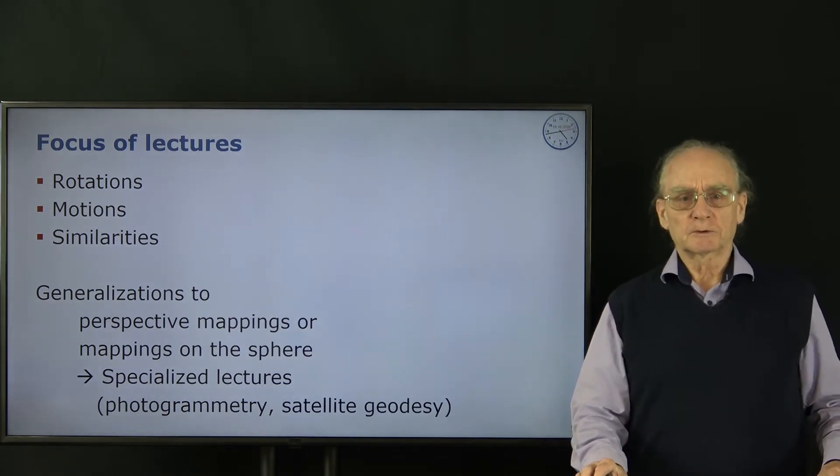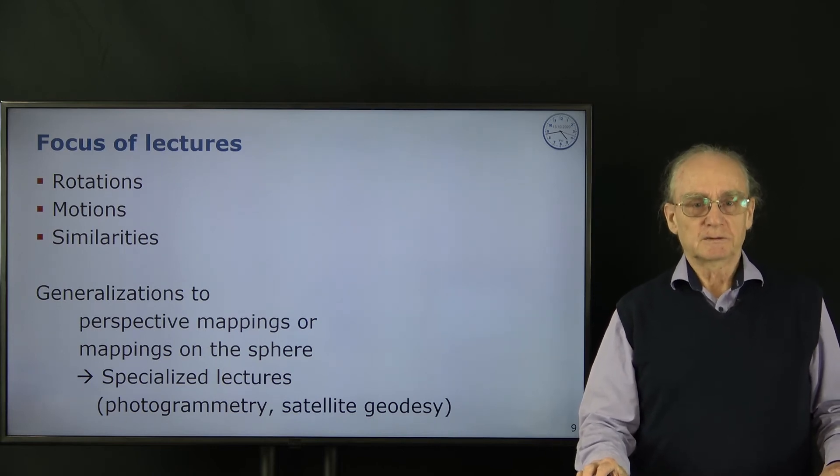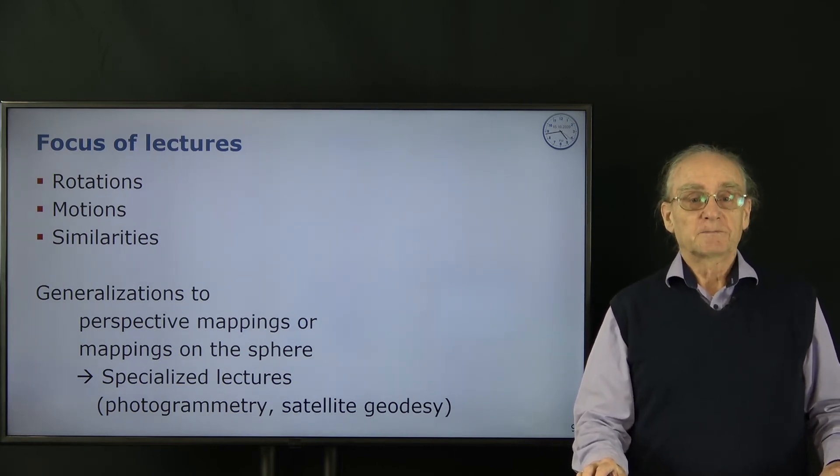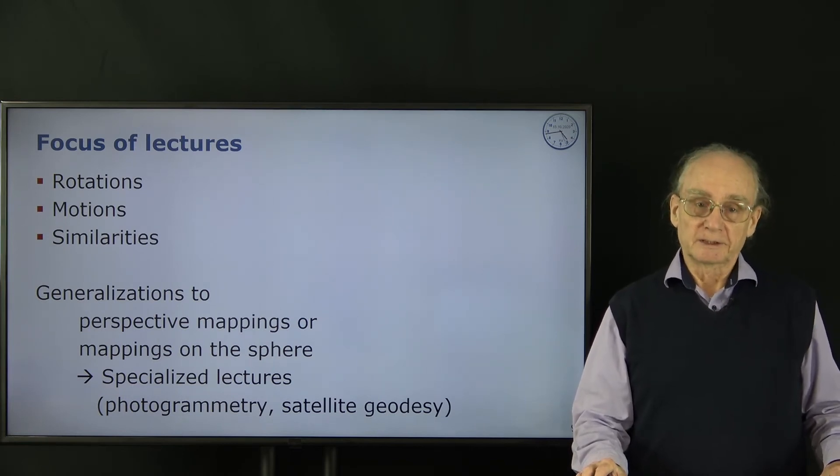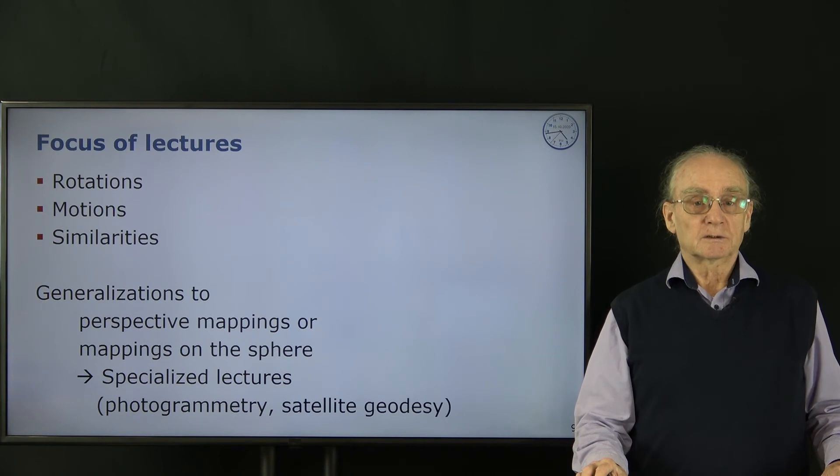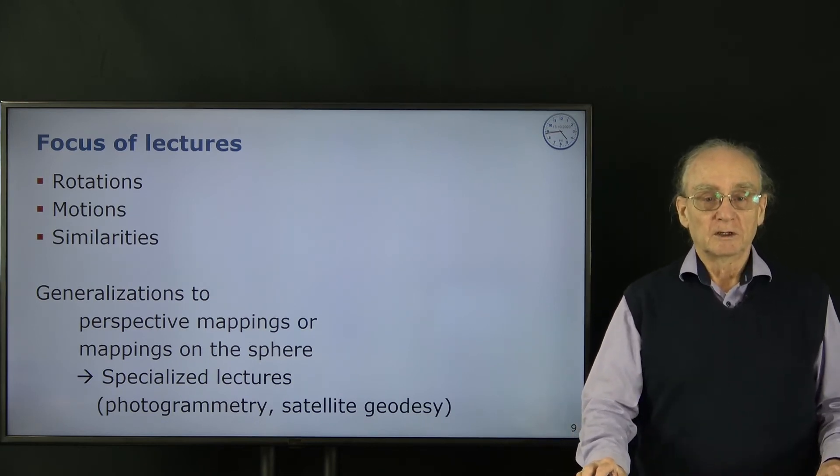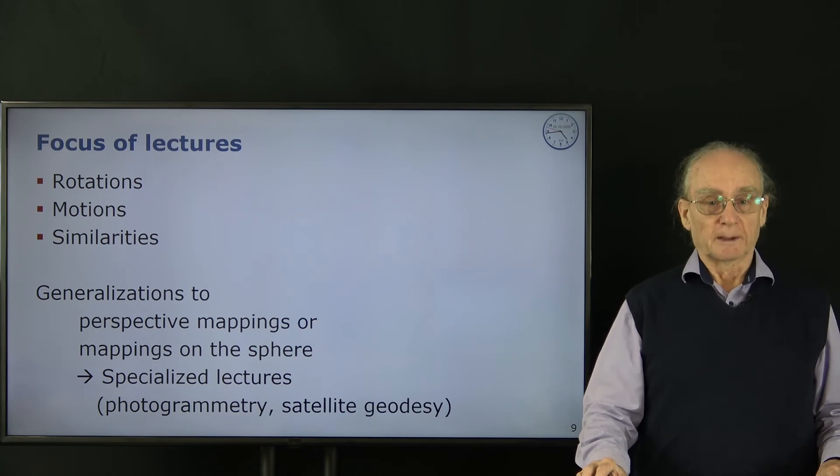We do not talk about all types of 3D coordinate systems, but we focus on rotations in 3D. We start with 2D and then we focus on motions in 2D and 3D. And we look into similarities where we also have scale differences between the different coordinate systems. There are of course generalizations. We need perspective mappings in computer vision and photogrammetry, and we need mappings on the sphere in satellite geography or in geoinformation for map projections. These are covered in special lectures.